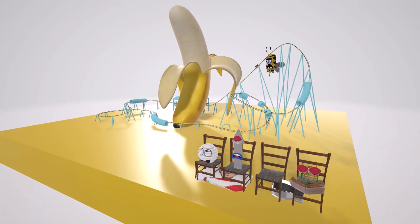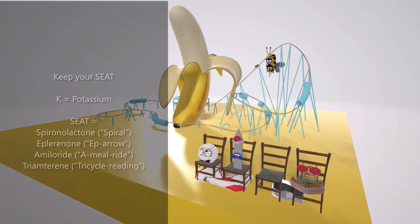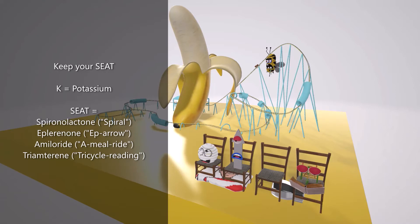We have a few guys waiting to go on the roller coaster over here, and they're going to remind us of the different potassium sparing diuretics we want to be aware of. The famous mnemonic goes, keep your seat. Keep K for potassium and seat for sparing diuretics: spironolactone, amiloride, and triamterene.